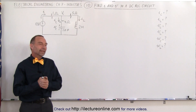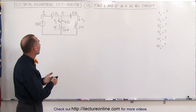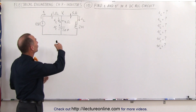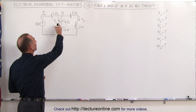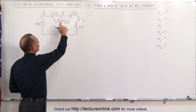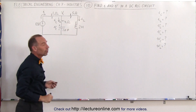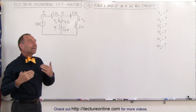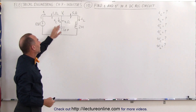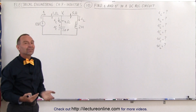Welcome to Electronline. Given this DC circuit, let's find out what the current is through the capacitor, through the inductor, the voltage across the capacitor, the voltage across the inductor, and the energy stored in the capacitor and in the inductor at steady state.